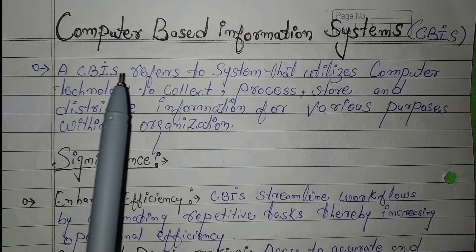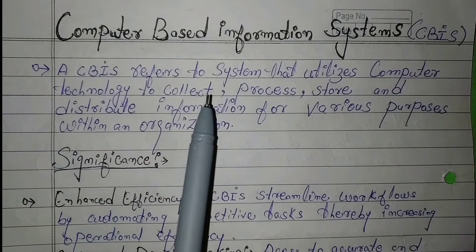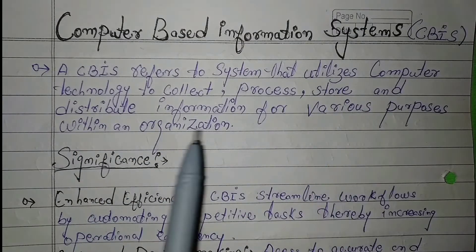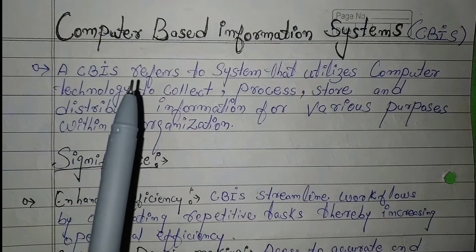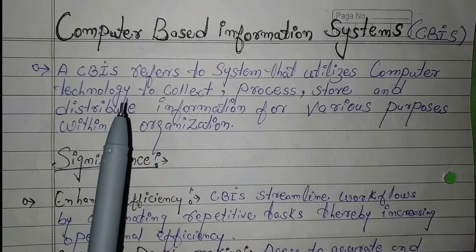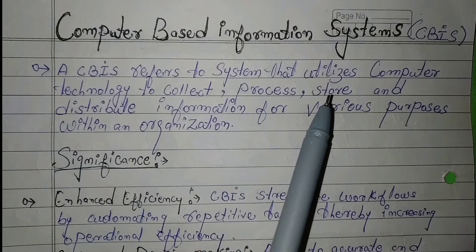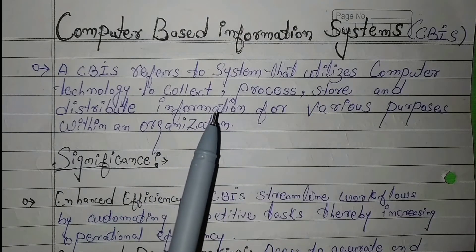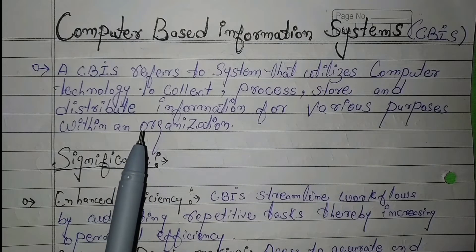CBIS refers to a system that utilizes computer technology to collect, process, store and distribute information for various purposes within an organization.